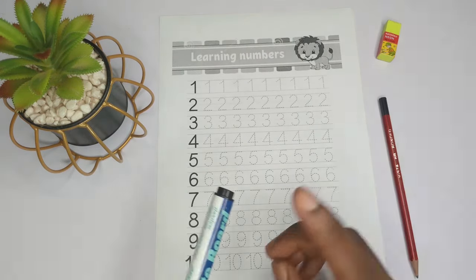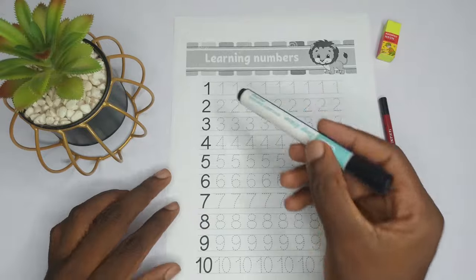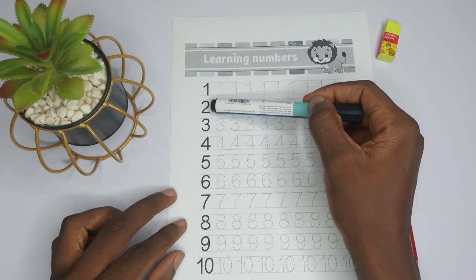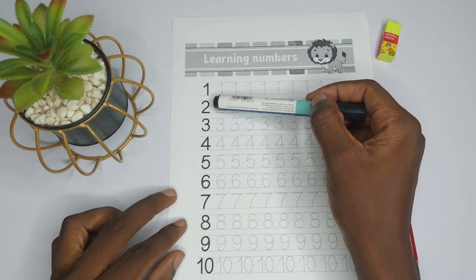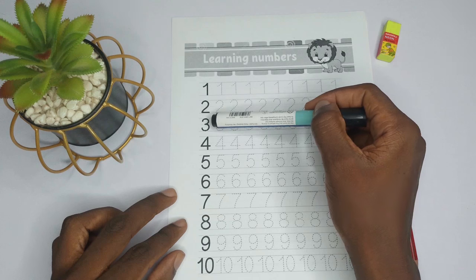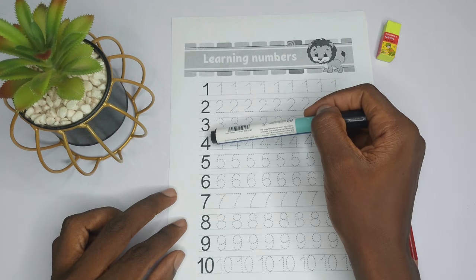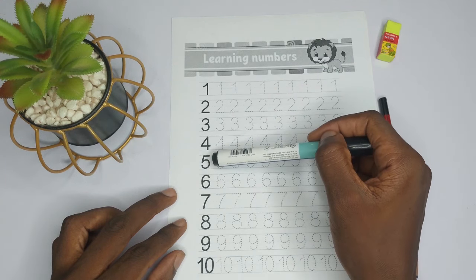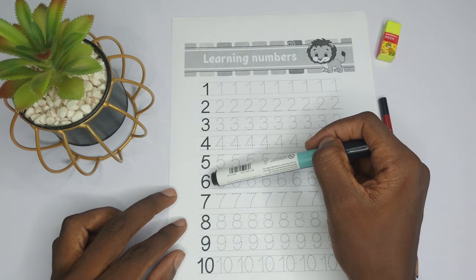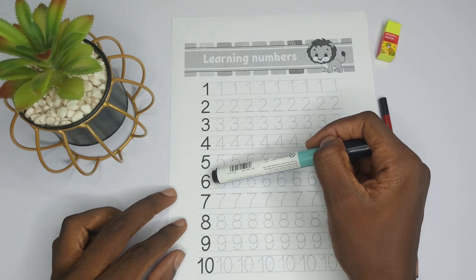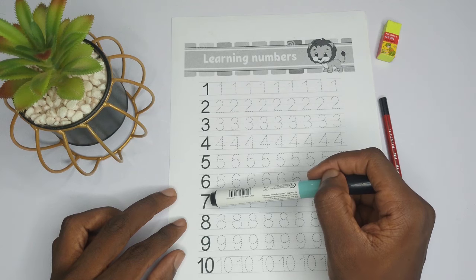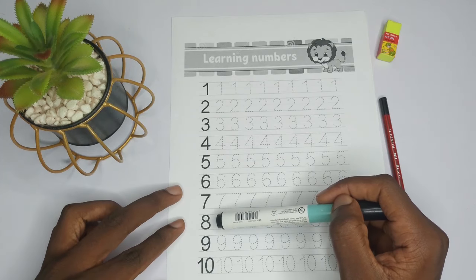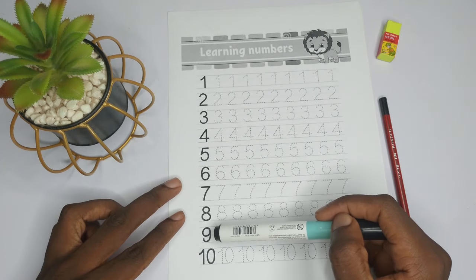Right, so let's start by counting the numbers. So we have one, one, one, two, two, two, three, three, three, four, four, four, five, five, five, six, six, six, seven, seven, seven, eight, eight, eight, nine, nine, nine.